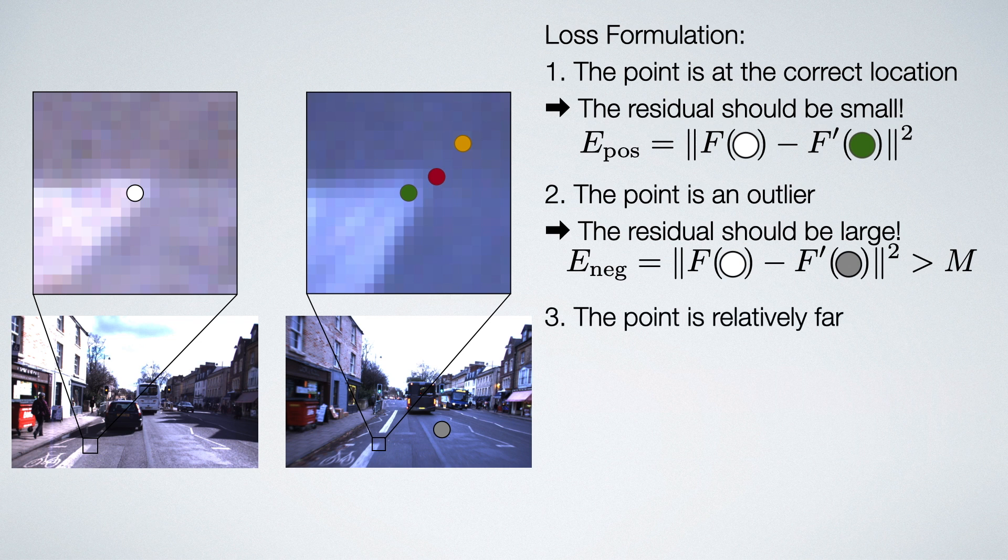Third, the point is relatively far away, which is inspired by the orange point. We assume gradient descent and all we want is that the gradient should point in the right direction.